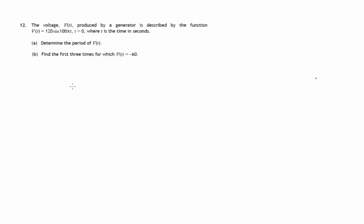So moving on to part B of the question, we're asked to find the first three times for which v of t equals negative 60. In other words, when does 120 sine 100 pi t, when is that equal to minus 60? So let's first of all divide both sides by 120. And we're looking at the equation, sine 100 pi t equals negative 0.5.